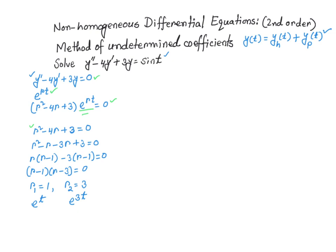After taking the derivative and plugging in, the exponential term e^(rt) cannot be zero, so the characteristic polynomial must equal zero. We factor it and get r₁ equals 1 and r₂ equals 3. So the solutions are e^t and e^(3t). The general solution for the homogeneous differential equation is y_h equals c₁ e^t plus c₂ e^(3t).